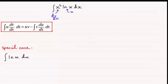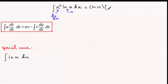So when it comes to integrating this, we've got u first of all, according to the formula. So that's going to be the natural log of x, multiplied by v, which is the integral of x squared. And if we integrate x squared, that's going to be x cubed over 3.